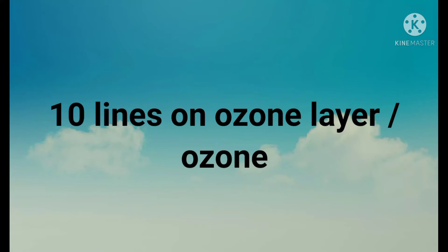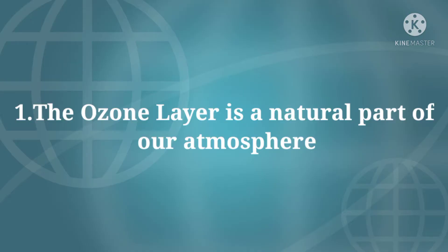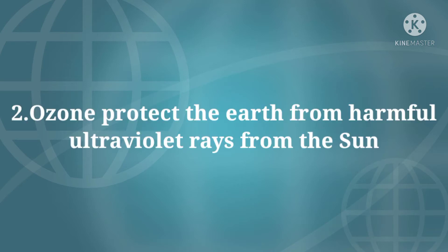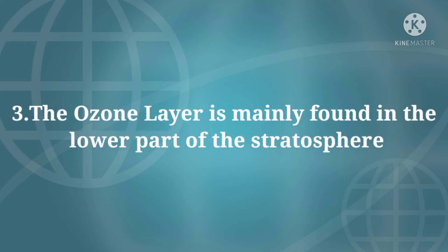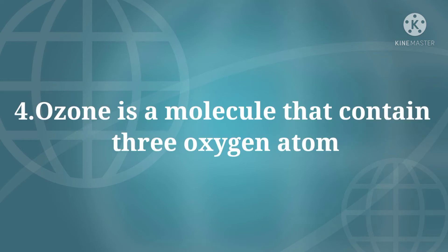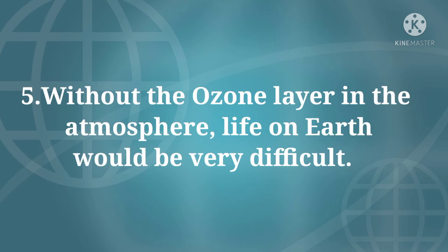The ozone layer is a natural part of our atmosphere. Ozone protects the earth from harmful ultraviolet rays from the Sun. The ozone layer is mainly found in the lower part of the stratosphere. Ozone is a molecule that contains three oxygen atoms.